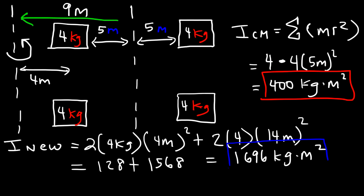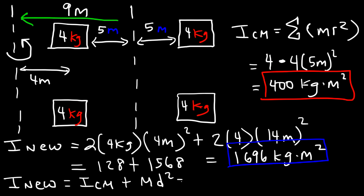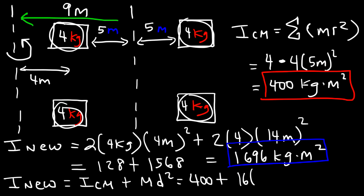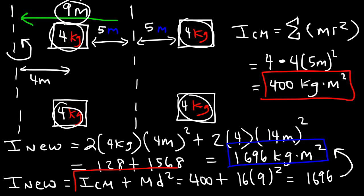Let's confirm this answer using the parallel axis theorem. The new inertia equals the old inertia plus md squared. The original inertia was 400. The mass of the whole system is 4 times 4, so 16 kilograms. The axis of rotation was shifted 9 meters, and 9 squared is 81. 81 times 16 is 1296, and 1296 plus 400 is 1696 kilogram times square meters — the same answer, confirming the parallel axis theorem.